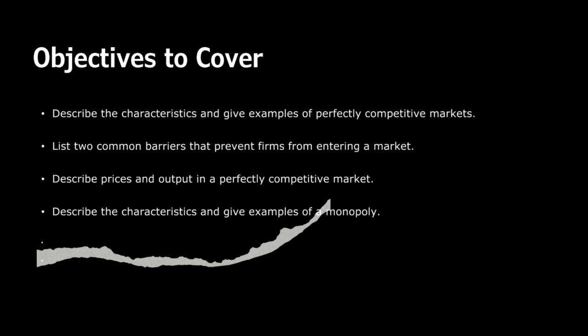In a perfectly competitive market, prices and output are determined by the intersection of supply and demand. Each firm operates at the point where marginal cost equals price, which is also equal to marginal revenue. This results in firms producing at an allocatively efficient level, meaning resources are used most effectively. Prices are determined solely by supply and demand forces, with no individual firm having the power to influence the market price.